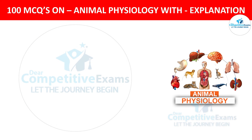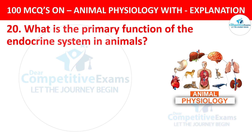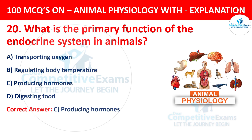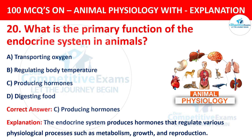Question number 20. What is the primary function of the endocrine system in animals? The options are transporting oxygen, regulating body temperature, producing hormones, or digesting food. The correct answer is C, producing hormones. The endocrine system produces hormones that regulate various physiological processes such as metabolism, growth, and reproduction.